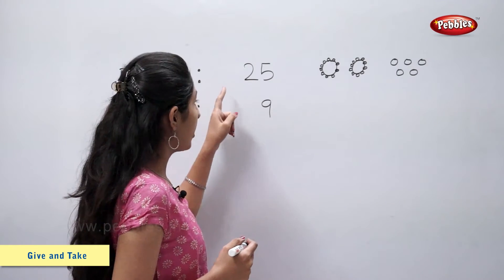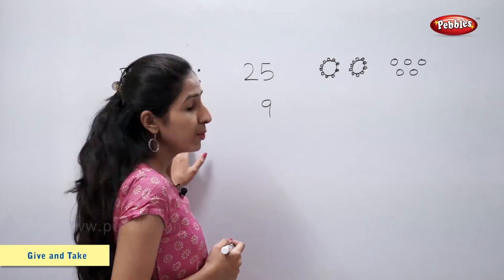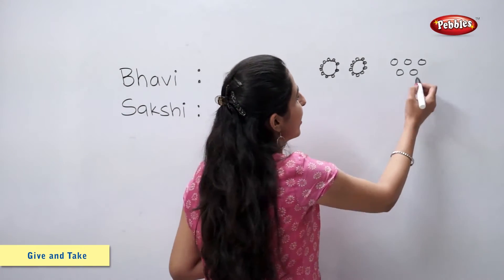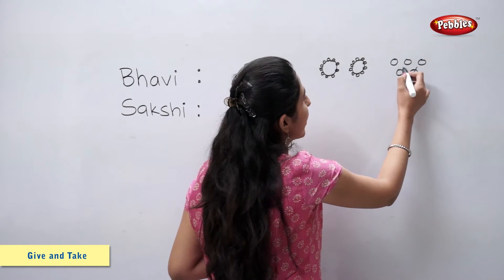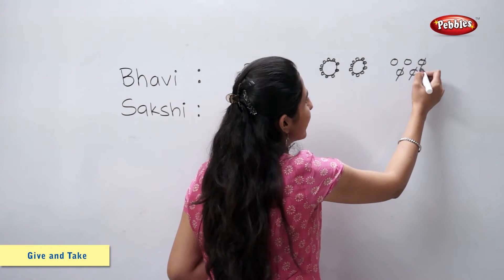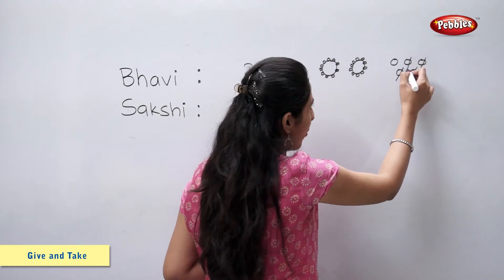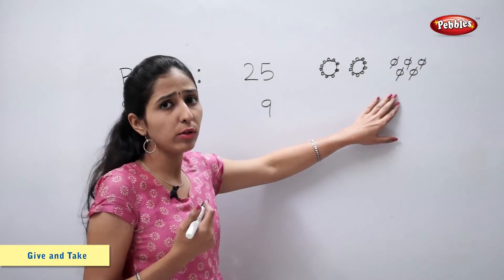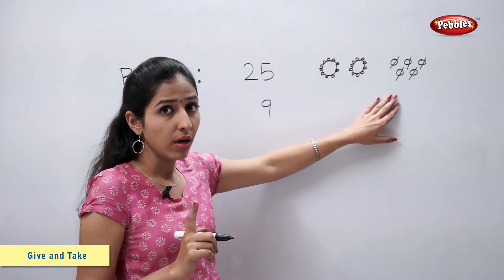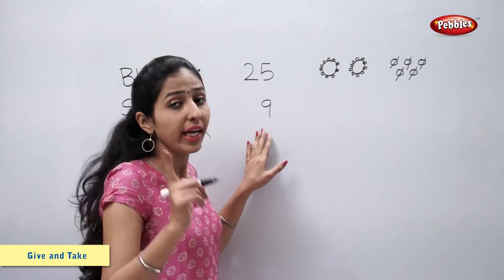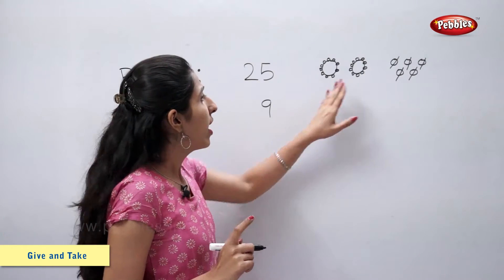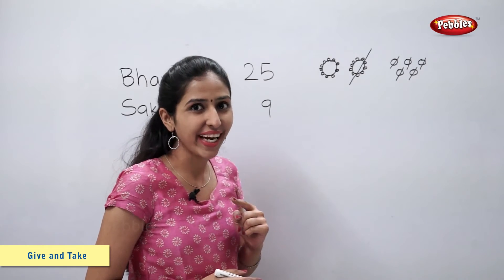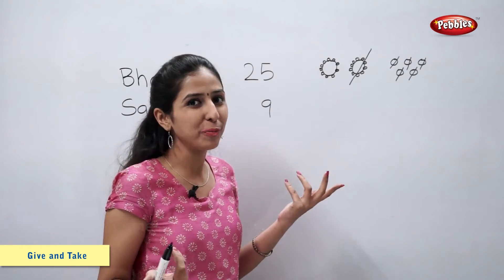Now she gave 9 pearls to Sakshi, so let's take away 9 pearls. 1, 2, 3, 4 and 5. Students, there are only 5 loose pearls. So to give Sakshi 9 pearls, I will break this bangle and we will get 10 more loose pearls.